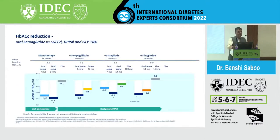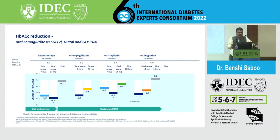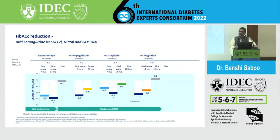When oral semaglutide is compared with SGLT2, DPP4, and other GLP-1 agents, with monotherapy it showed A1c reduction of 1.3 with 7 mg and 1.5 compared with placebo. Compared with SGLT2, it is 1.3; with other gliptins it showed up to 1.1; and even with injectable GLP-1, oral semaglutide was found to be better than injectable liraglutide in reducing A1c.